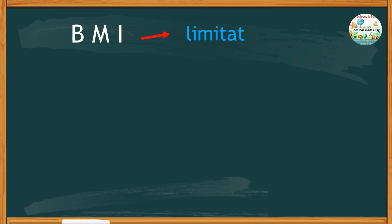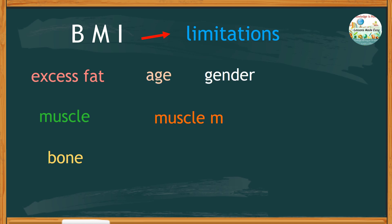The BMI cannot tell the difference between excess fat, muscle, or bone. The adult's BMI does not take into account age, gender, or muscle mass.